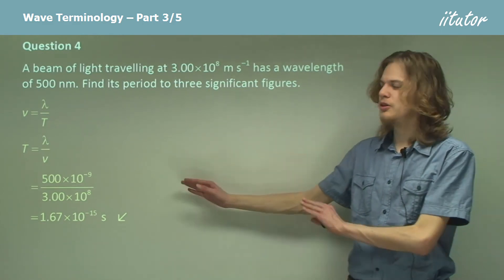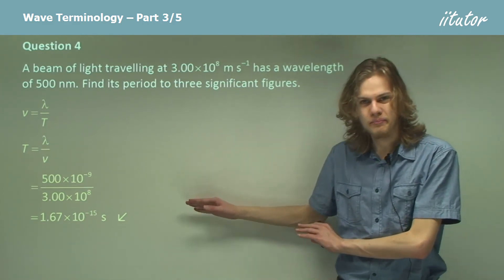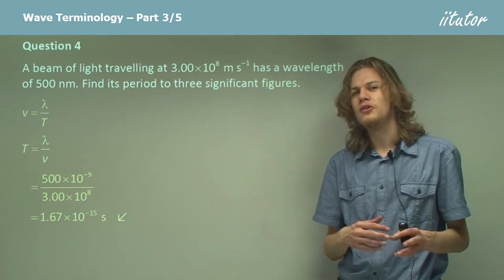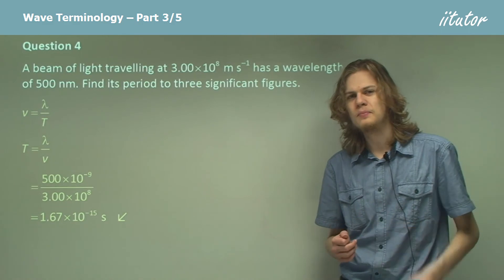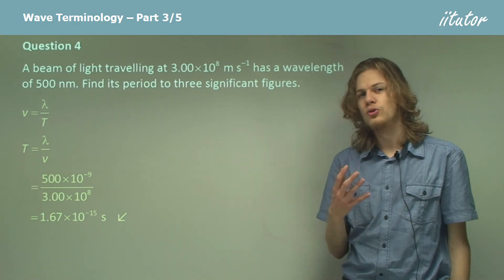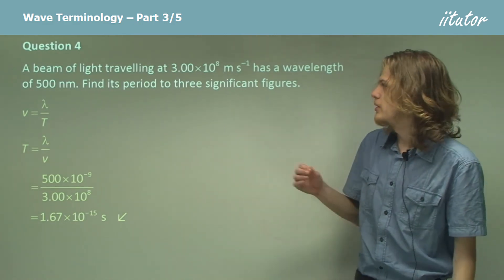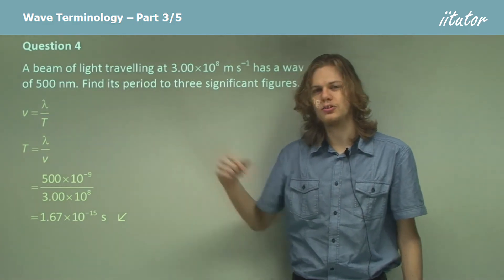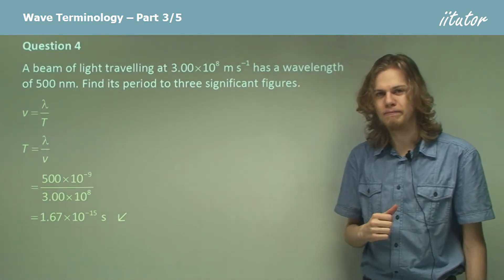That is an incredibly small amount of time. Beams of light have very, very small periods, and it's often more useful to measure them in terms of their wavelength than in terms of their period.